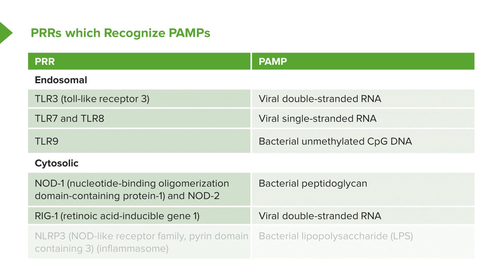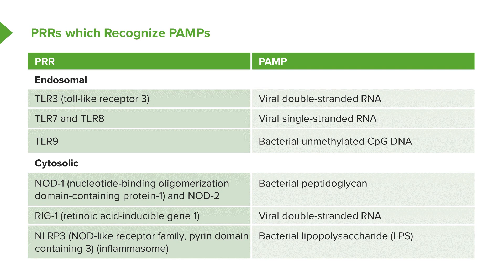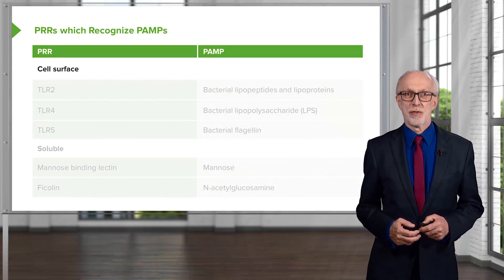RIG1, retinoic acid inducible gene 1, recognizes viral double-stranded RNA. A third cytosolic pattern recognition receptor is NLRP3 — NOD-like receptor family pyrin domain containing 3 — which is part of the inflammasome, which we'll discuss shortly. NLRP3 recognizes bacterial lipopolysaccharide, LPS.